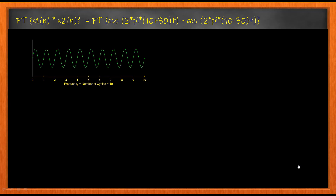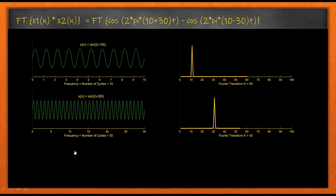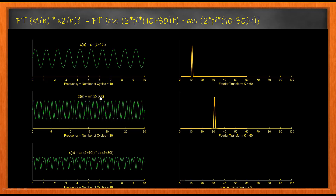Let us go to the actual graph and see how it plots. Using sine(2π·10t) I get a peak at 10, and the second signal with frequency 30 gives a peak at 30. The product of these two signals — multiplicative mixing — gives us just as we predicted: a peak at 20 and another peak at 40, which is the sum (10+30) and the difference (30−10) of the frequencies.